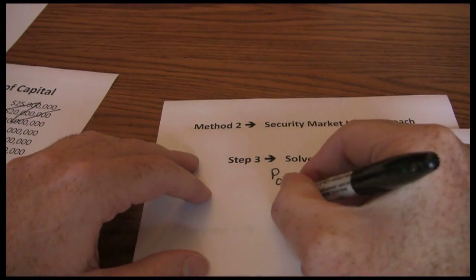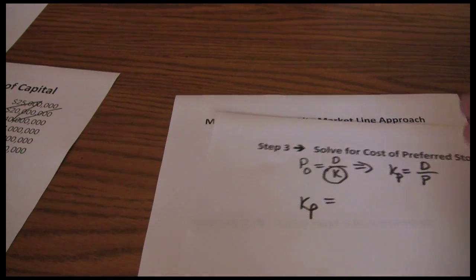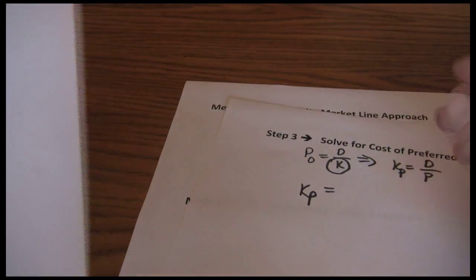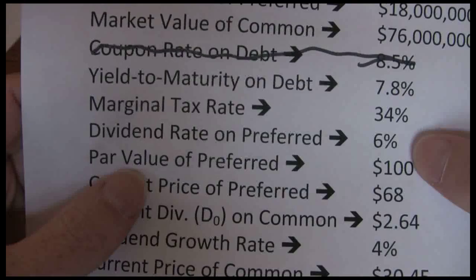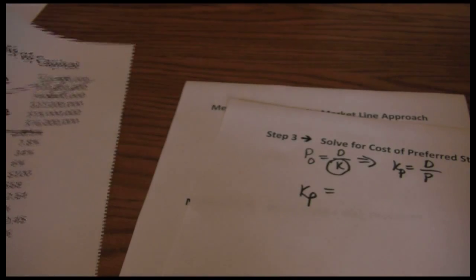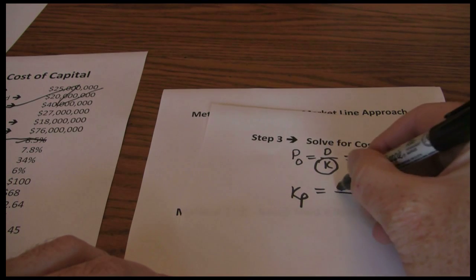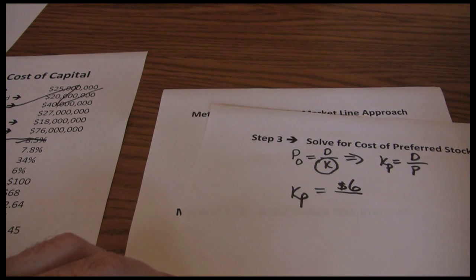So now we just want to work through that. We want the dividend on the preferred stock. We have a dividend rate of 6% and a $100 par value. So our dividend is going to be $6, just 6% of $100.